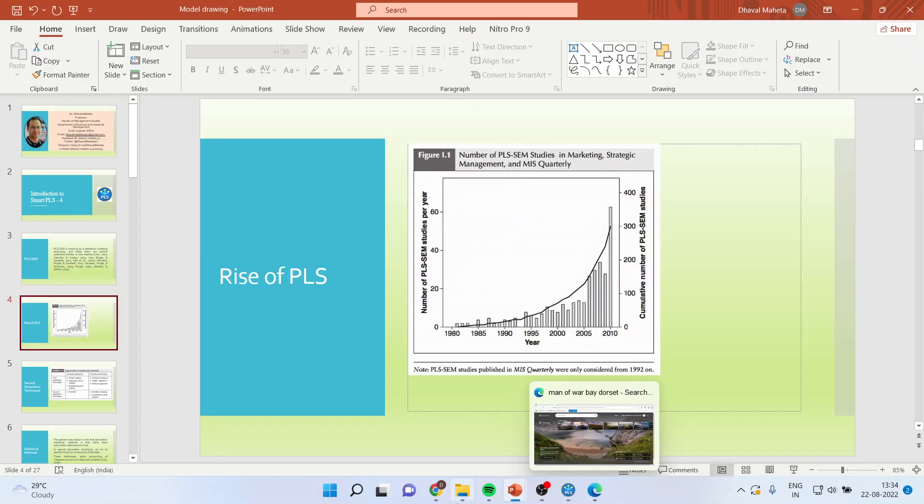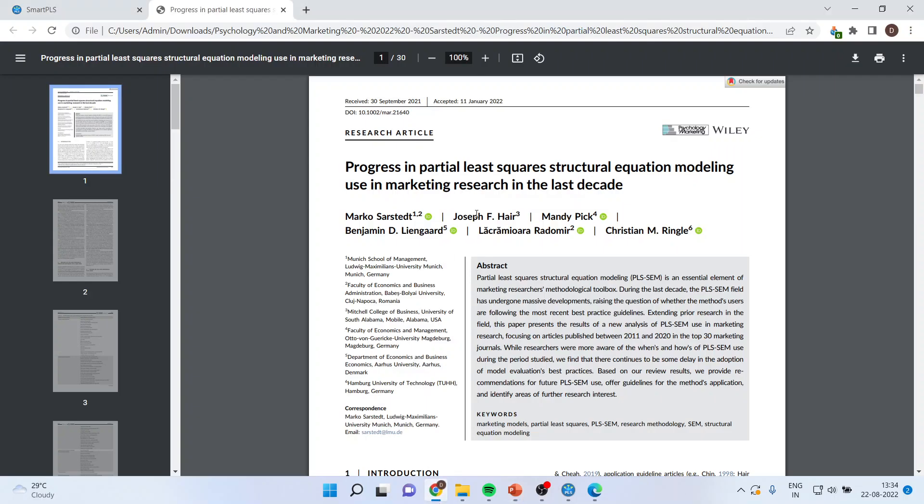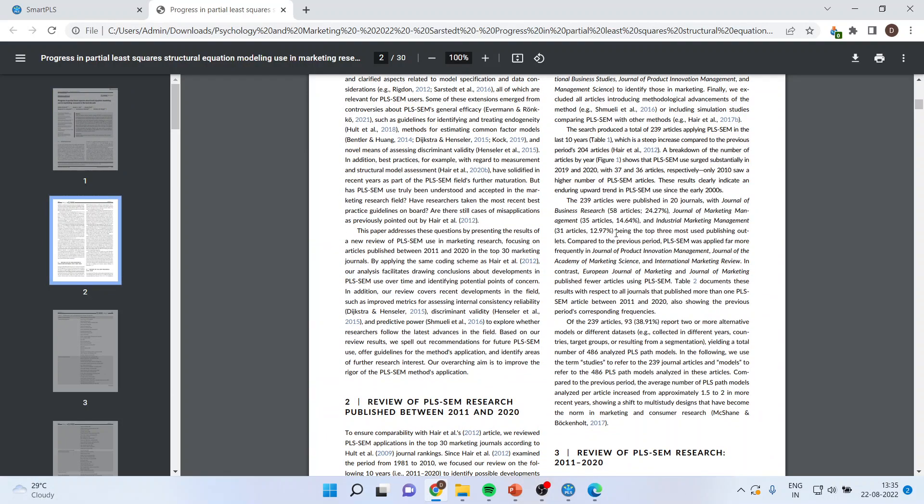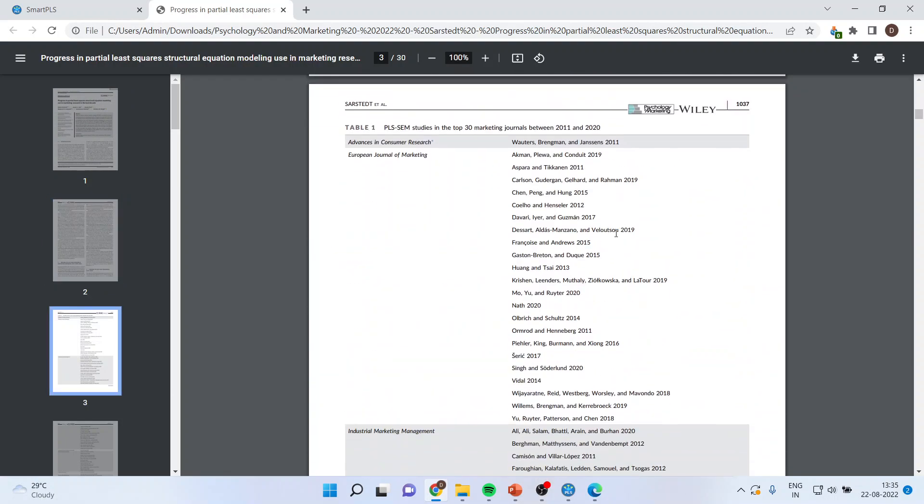There's a beautiful article written by the authors titled Progress in Partial Least Squares Structural Equation Modeling by Marco Sarstedt, Joseph Hair, Mandy Ringle, Benjamin Leininger, and Christian Ringle. According to them, why is Smart PLS so popular?